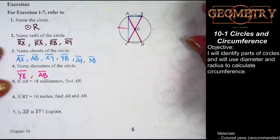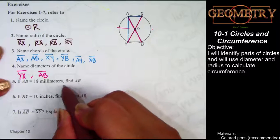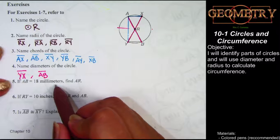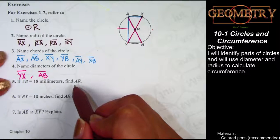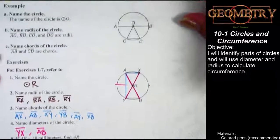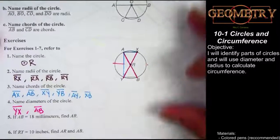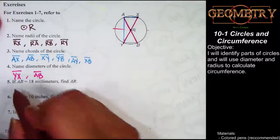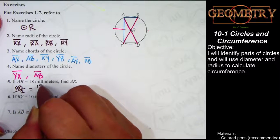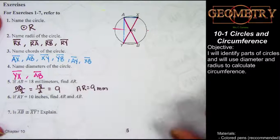Let's look at number 5. If AB is 18 millimeters — AB is a diameter — and diameters have a relationship to radii. We need to find the measurement of AR. AR is a radius. Looking at our notes from above, a radius is half the diameter. Because I've been given a diameter measurement, I can take that measurement and divide it by two to get the radius. 18 divided by 2 is 9, so AR's measurement is 9 millimeters.